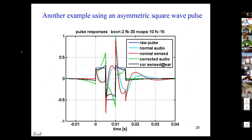This is what happens when we use an asymmetric square pulse. Again, I've chosen a loudspeaker box with a 30 hertz double high pass and 10 capacitors at 15 hertz. The original is the blue curve, and it goes to plus a half, minus one, plus a half. So its area is zero, but it is asymmetric and has more second harmonic or even harmonic components.